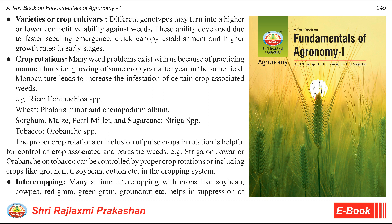Varieties or crop cultivars: different genotypes may have higher or lower competitive ability against weeds. This ability develops due to faster seedling emergence, quick canopy establishment, and higher growth rates in early stages. Crop rotations: many weed problems exist because of practicing monocultures, i.e., growing the same crop year after year in the same field. Monoculture leads to increased infestation of certain crop-associated weeds.